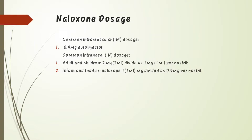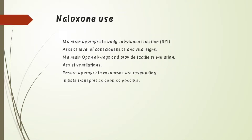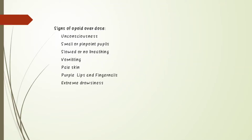For infants, naloxone is given at 1 mg, with 0.5 mg per nostril. Uses of naloxone include: maintaining appropriate body position, assessing the level of consciousness and vital signs, maintaining open airways, providing tactile stimulation, assisting ventilation, ensuring appropriate resources are responding, and initiating transport as soon as possible.